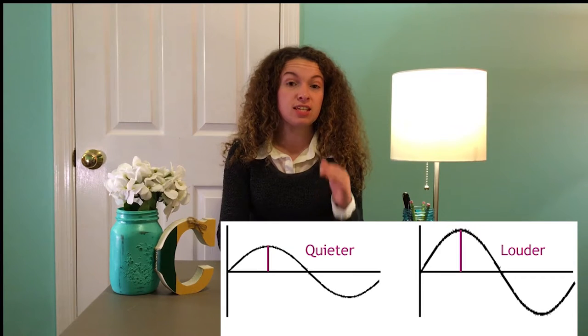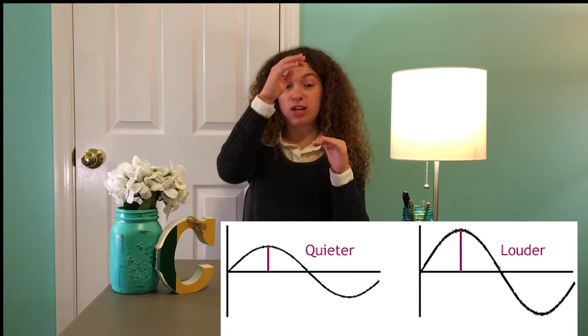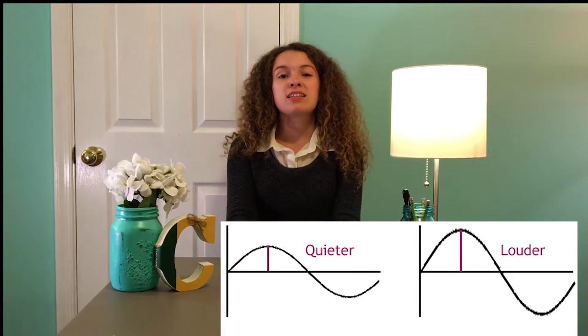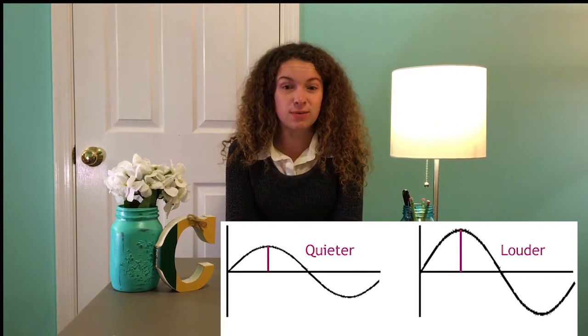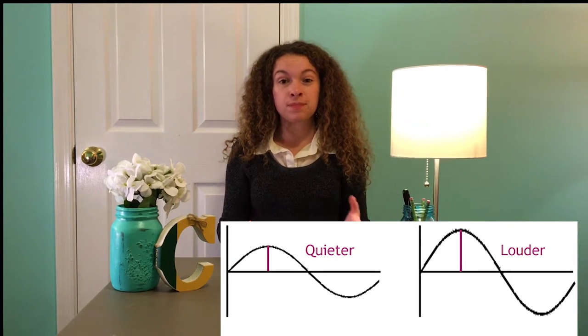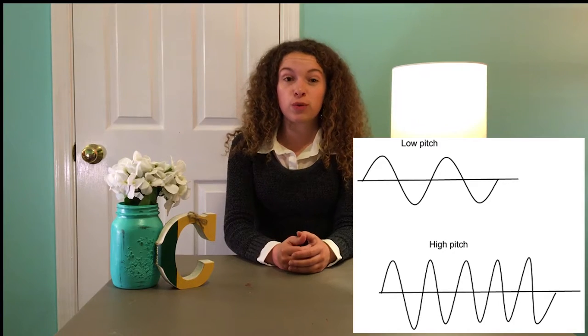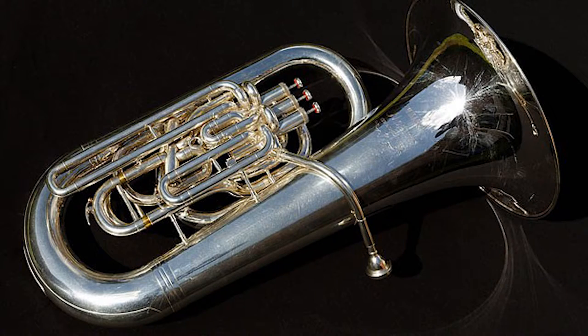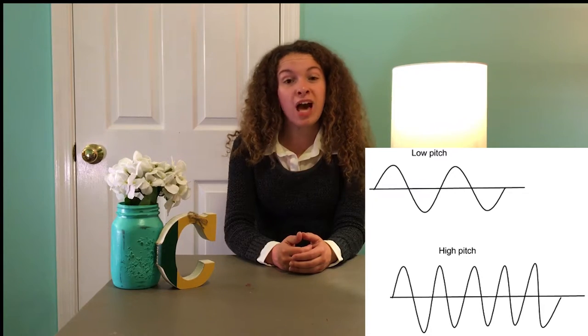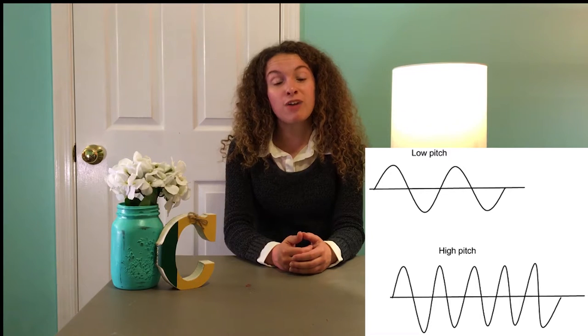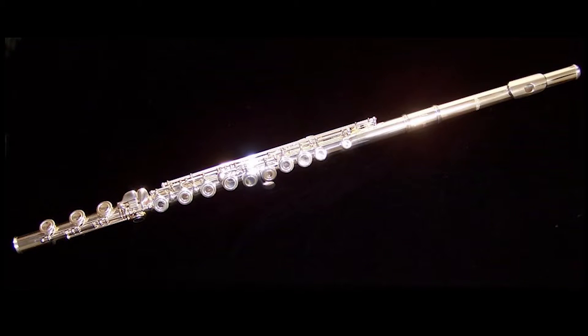So back to sound waves — how do we measure them? Two main factors, amplitude and frequency, tell us most everything. Amplitude, the distance from base to crest of the wave, tells us the intensity of the sound — how loud or soft it will be. Frequency tells us the speed of the sound. Sounds with lower frequency have a lower pitch, such as that produced by a tuba. Sounds with higher frequencies have a higher pitch, like sounds produced from a flute.